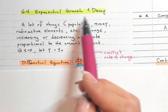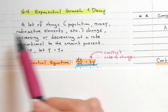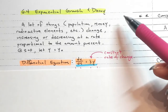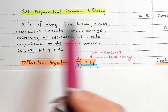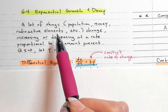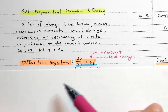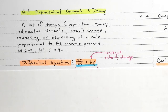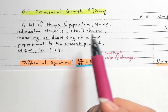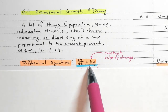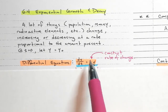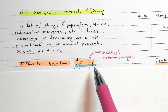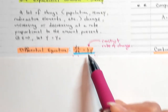Section 6.4 covers exponential growth and decay. Many things in life change at an exponential rate, and that rate comes from a differential equation. Things like population, money, radioactive elements, and even the coronavirus grow exponentially. The differential equation states that something is changing at a rate proportional to the amount present — meaning it's multiplied by the current amount.